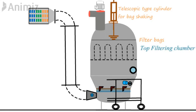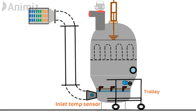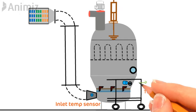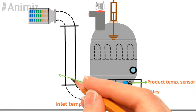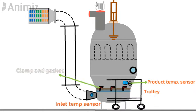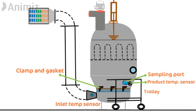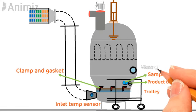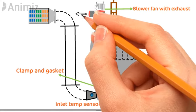Other accessories include a trolley attached to the product container for loading and unloading of the product. There is an inlet temperature sensor which controls the temperature of the inlet air, and a product temperature sensor which shows the actual temperature of the product. Stainless steel clamps and rubber inflatable gaskets provide complete sealing of the product container with the bottom wind inlet chamber. There is also a sampling port for taking out samples, a view glass, and a blower fan with exhaust at the top for exit of the air.